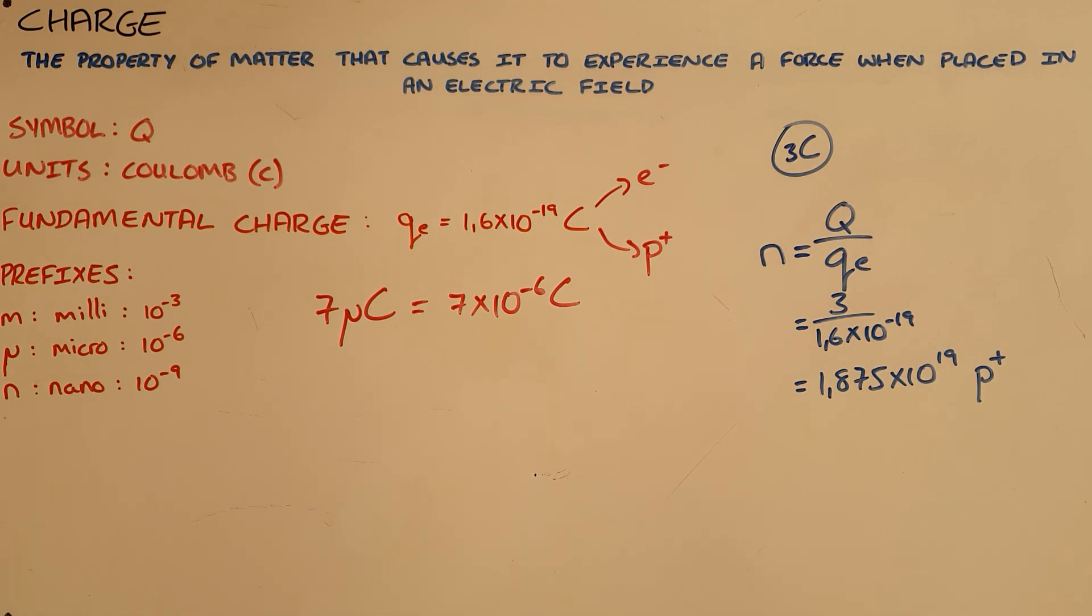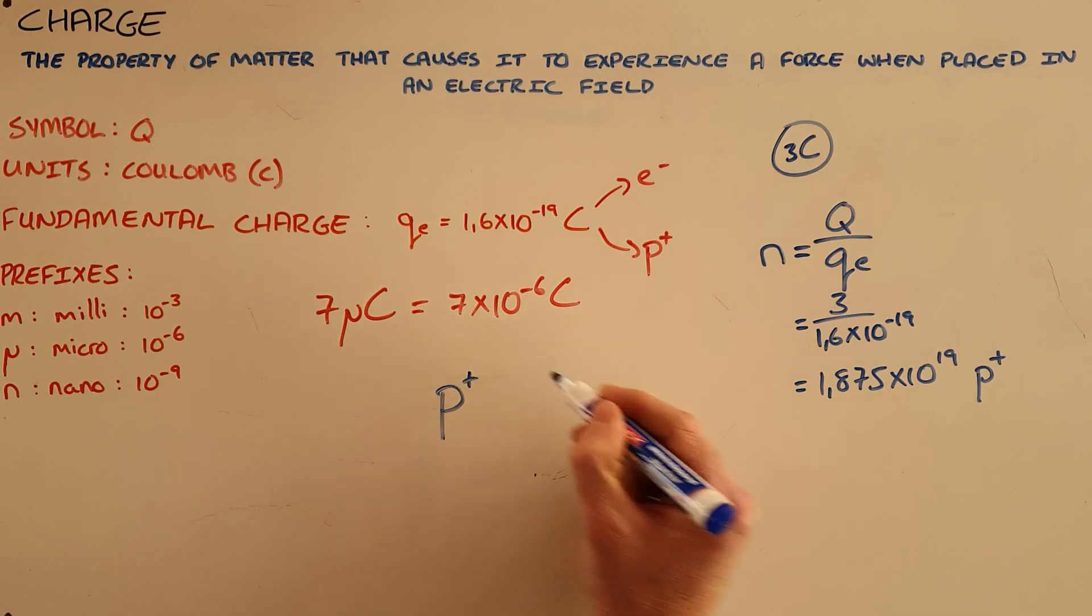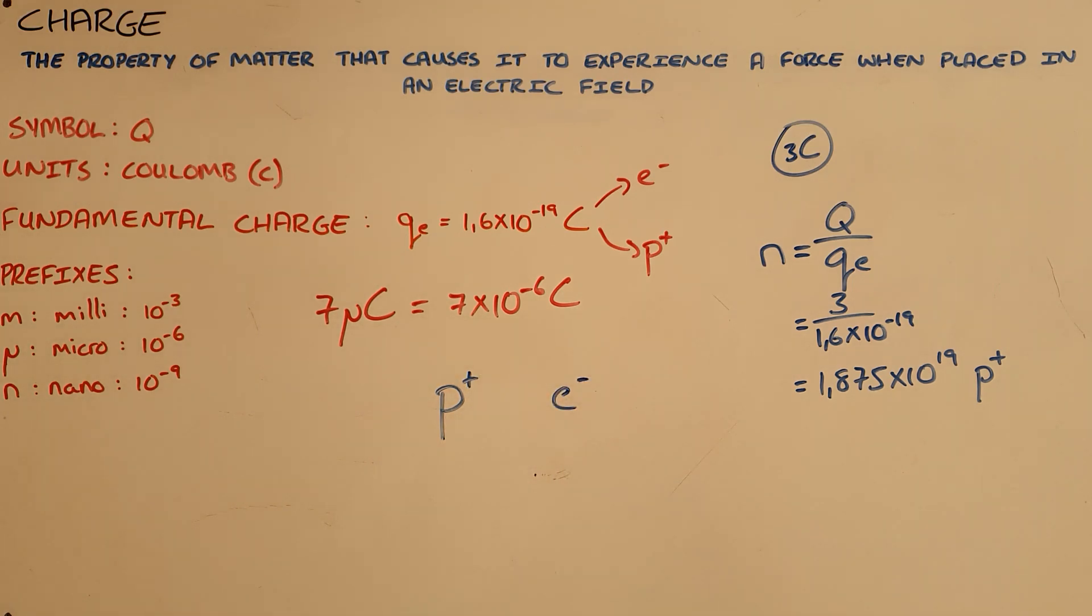Then finally, it's important to note that since charge can only come in the form of protons and electrons, when there is an excess of one or the other, when there is an excess of electrons or excess of negative charge, we say the object is negatively charged. When there is an excess of protons, we say the object is positively charged.